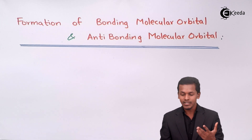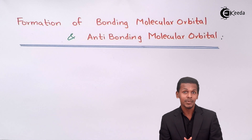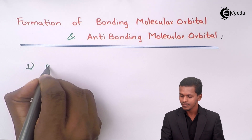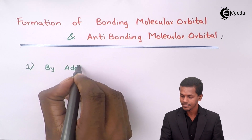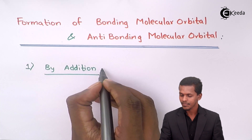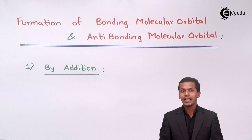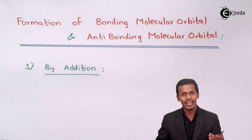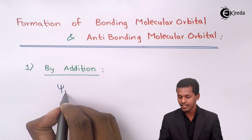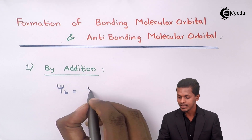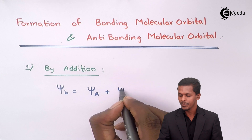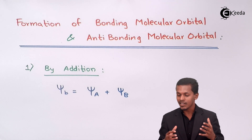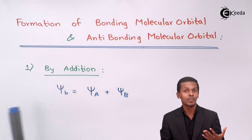There are two kinds of methods by which molecular orbitals are formed, whether bonding or anti-bonding. The first method is by addition of the wave functions — both wave functions are added. This is what we did in the previous lecture, where psi-bonding was represented as psi-a plus psi-b. This clearly indicates that the wave functions are of the same phase and are combined such that the bonding molecular orbital is formed.